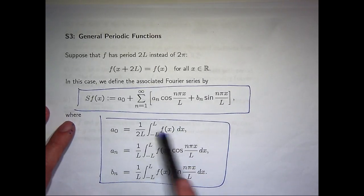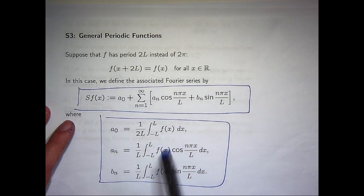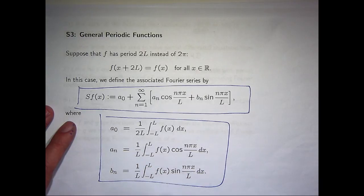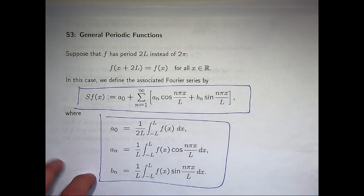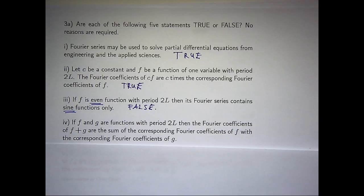So instead of having f here, imagine I had f plus g. I could break that sum up into two integrals. So yes, it is true. So let's say you know the Fourier series for x squared, and you know the Fourier series for 2x. If you want to calculate the Fourier series for x squared plus 2x, well, to get the coefficients, just add the corresponding coefficients together. So this is true.